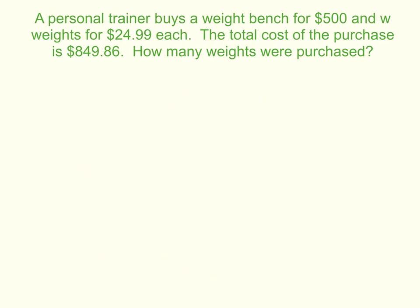Okay, the next question says, a personal trainer buys a weight bench for $500. So one weight bench, that's $500. And w weights. So they're giving us the variable, w weights for $24.99 each. So there's that word each again, $24.99 per weight. So the total cost of the purchase is $849.86.